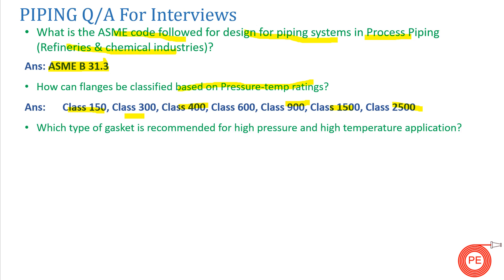Which type of gasket is recommended for high pressure and high temperature applications? This is an important question if you are going for a power plant or steam application interview. The gasket material used is a spiral wound metallic gasket. In this gasket, there is a metallic insertion inside that is spirally wound.